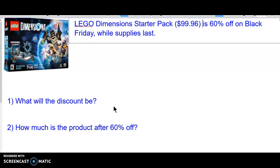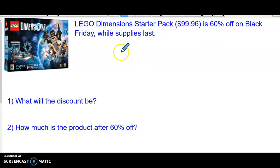So let's look at how to do this. First of all, it's very similar to tax. Same exact thing, but one thing different. So first of all, you've got to take 60% of $99.96. So we're going to take 60% of $99.96.